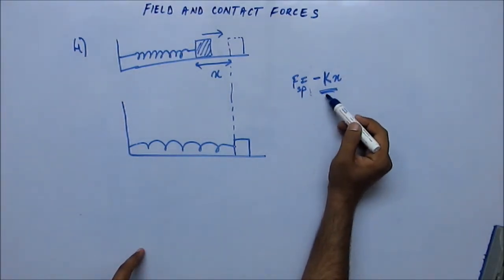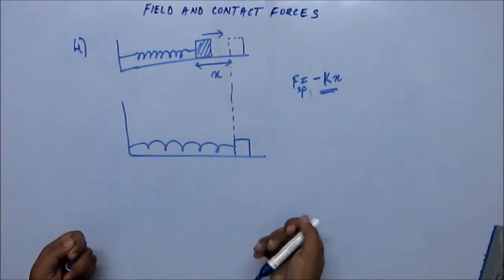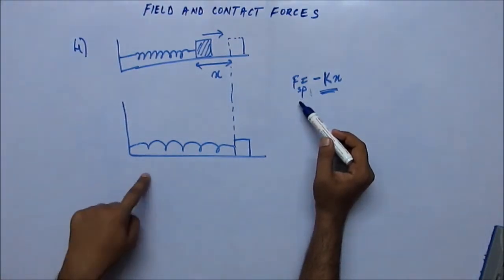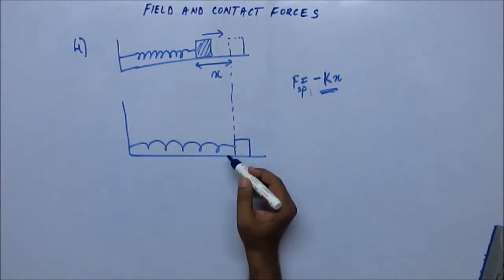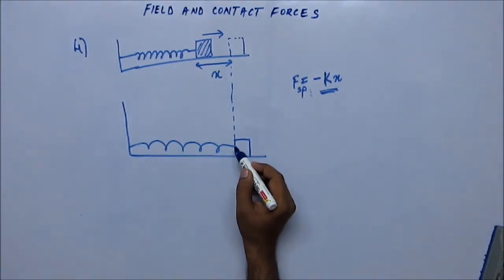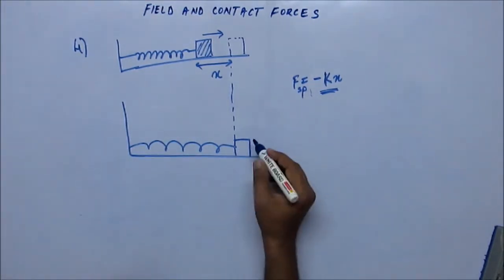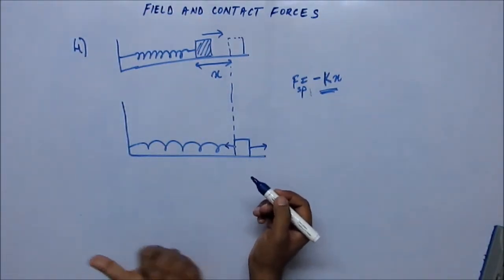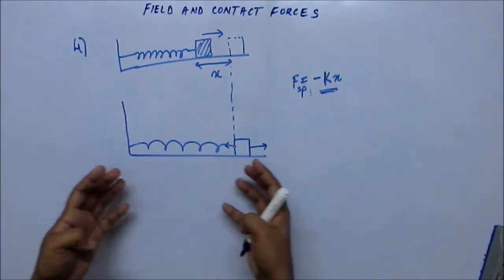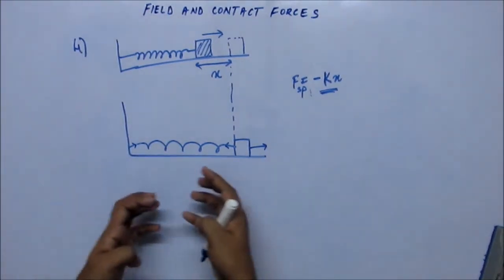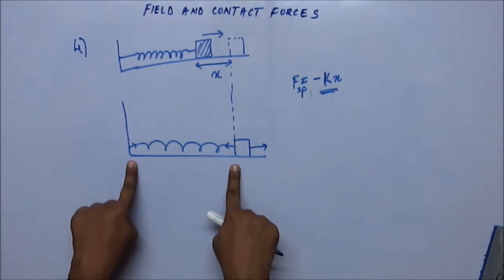If there is more elongation — if the value of x is more — then the value of the force is more. So if you want more elongation, you have to apply more external force to balance the increased spring force. Spring force tries to restore the spring to its original position, so it is a restoring force. Since it's a restoring force, it acts away from the body. The spring force on the block will be to its left, and on the wall it will be to its right — acting away from both bodies.